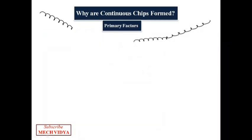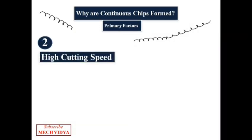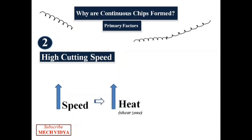Next is the high cutting speed. If the cutting speed of the tool is very high, then more heat will be generated in the shear zone, which will make the work material soft, thereby reducing its strength. This soft material will require less force to deform. Thus the material flows more easily, promoting continuous chip formation.